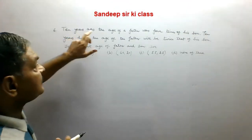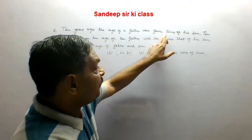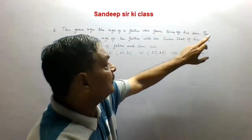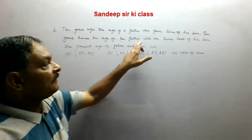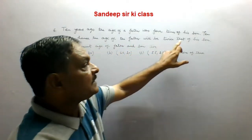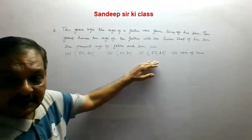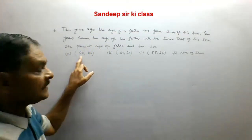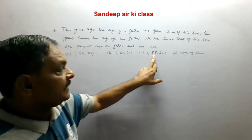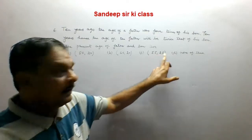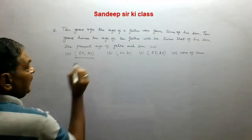Question number 6. Ten years ago the age of a father was four times that of his son. Ten years hence the age of the father will be twice that of his son. The present ages of father and son are: option A is 50 and 20, B is 60 and 20, C is 55 and 25, and D is none of these.